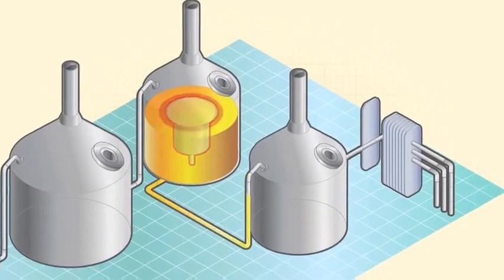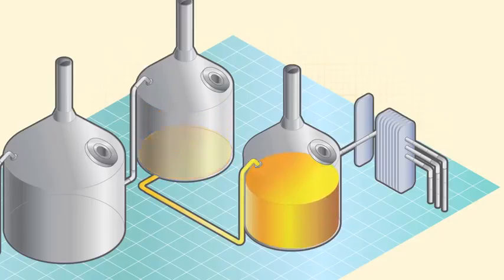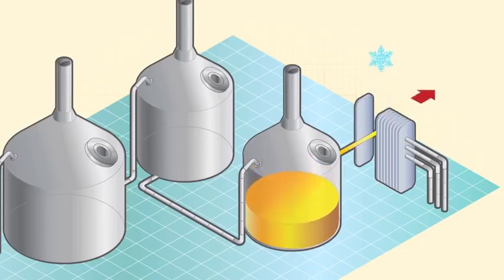After boiling, the wort is moved to a whirlpool for the wort separation stage. Here, any malt or hop particles are removed to leave a liquid that is now ready to be passed to the next stage of cooling and fermentation.